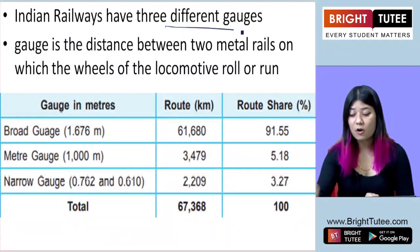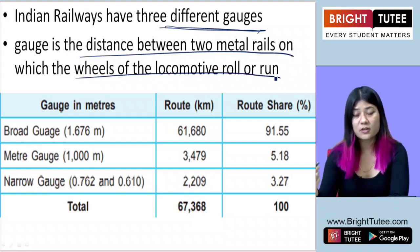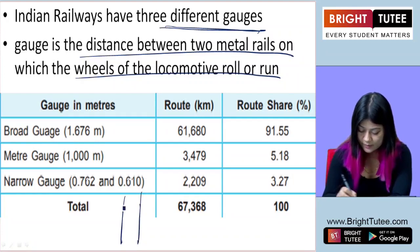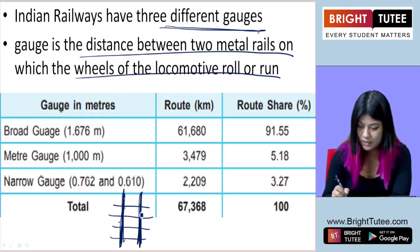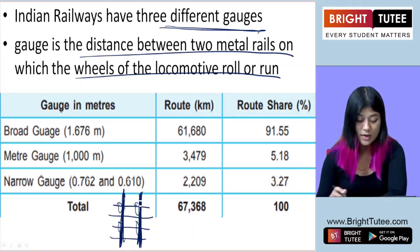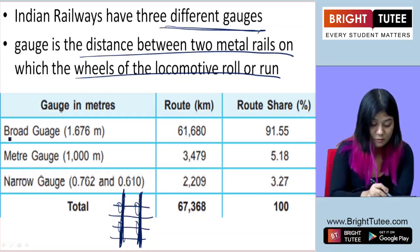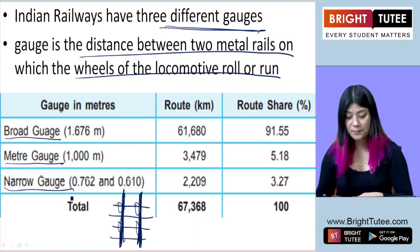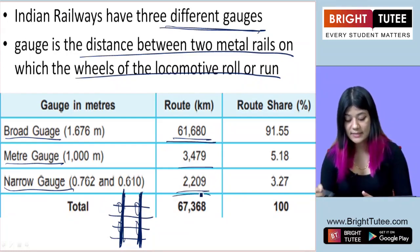Indian railways have three different gauges. A gauge is the distance between the two metal rails on which the wheels of the locomotive run. Indian railways have three gauges: broad gauge, meter gauge, and narrow gauge. The broad gauge is the widest and runs the longest distances; the narrow gauge is the least wide, and the meter gauge falls in between.